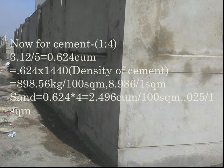The 3.12 cubic meters we got is divided by 5, because the ratio is 1 is to 4. That gives 0.624 cubic meters of cement. That volume is multiplied by the density of cement, that is 1440 kg/m³, giving 898.56 kg for 100 square meters.